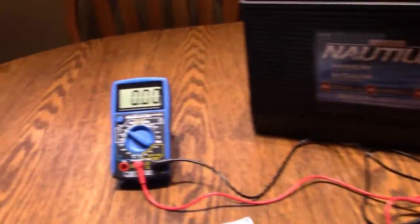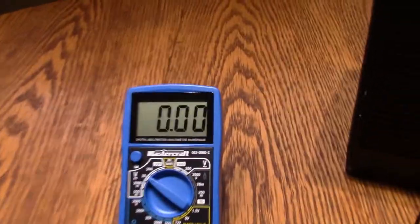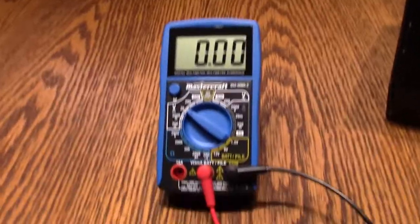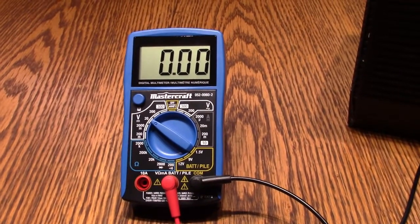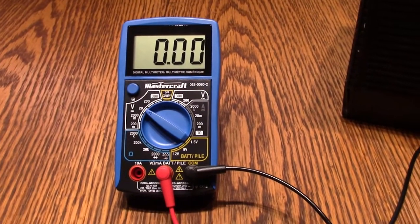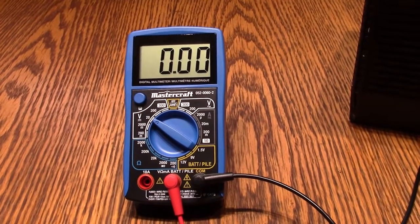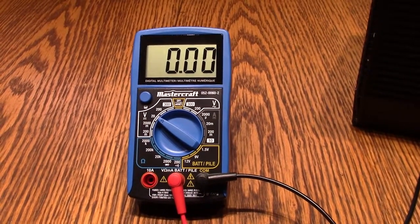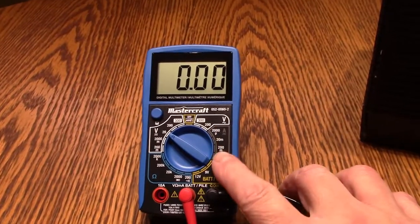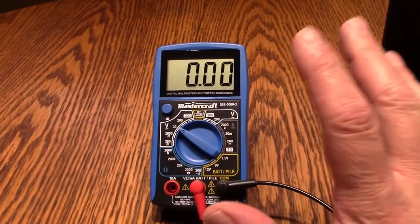First, let's have a look at the multimeter we're going to be using today. This was purchased at Canadian Tire in Canada, which is similar to AutoZone, and only costs $20. This is an amazing meter for $20.